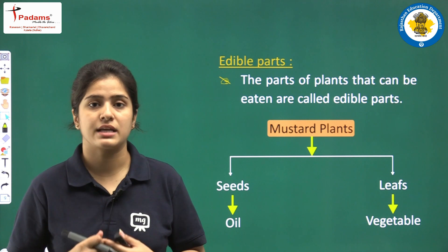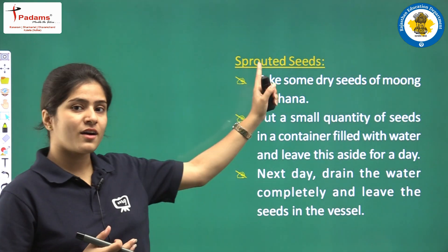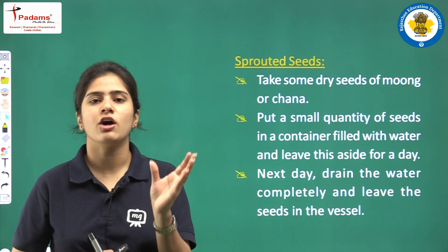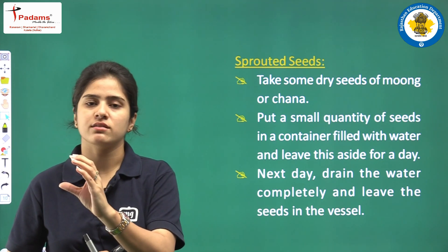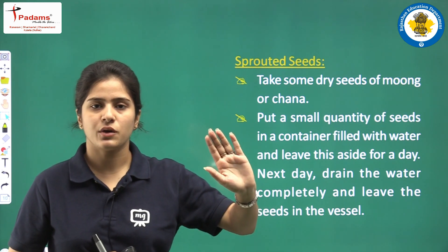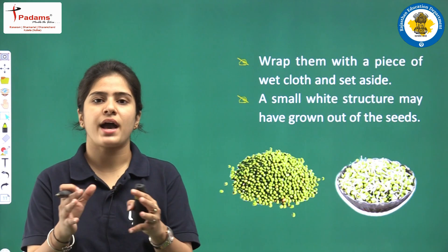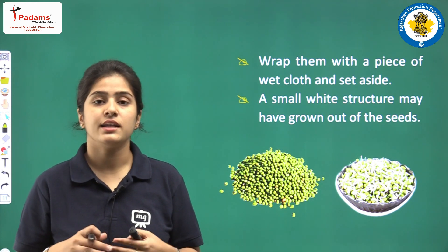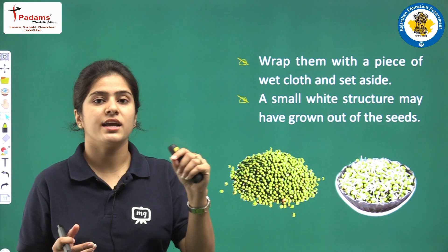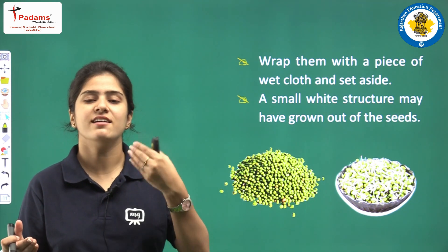Students, do not randomly taste anything because it can be poisonous for you. Now we will discuss sprouted seeds. To make sprouted seeds, take a bowl of moong or chana. Soak it in a vessel filled with water overnight. After that, drain the water and wrap the moong or chana in a wet cloth. Keep it for one to two days. You will see a small white tail-like structure coming out of the seed — that means your seeds are sprouted.